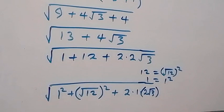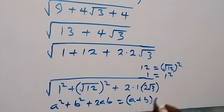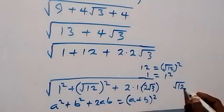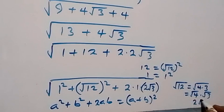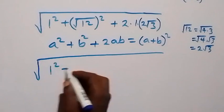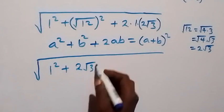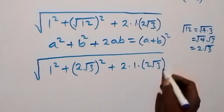When we have something of the form a² + b² + 2ab, this is the same as (a + b)². We can write √12 as √(4 times 3), which separates as √4 times √3, and √4 is 2, so √12 equals 2√3. What we have then becomes square root of 1² + (2√3)² + 2 times 1 times 2√3.